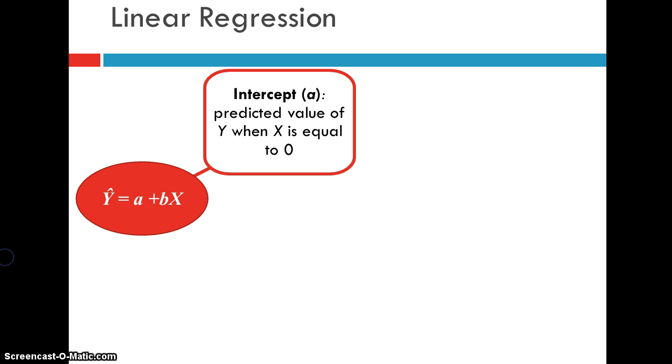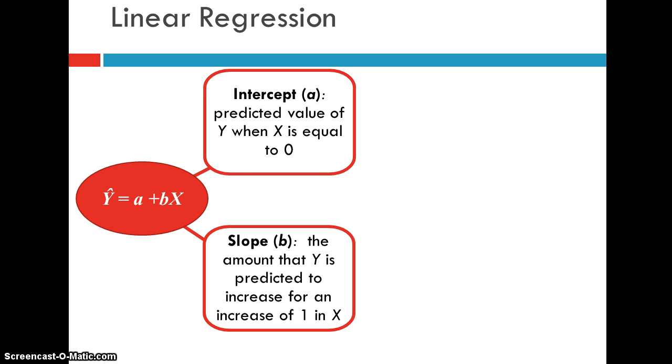So the intercept, a, is the predicted value of y when x is equal to 0. And the slope, or b, is the amount that y is predicted to increase for an increase of 1 in x. So if we are predicting an individual's blood pressure based on weight, for every pound more that that individual weighs, then we would expect the blood pressure to go up a certain number of points. Okay, so that would be our slope. For every one, a one unit increase in x, this is the change we expect to see in y.